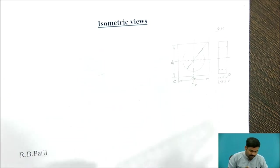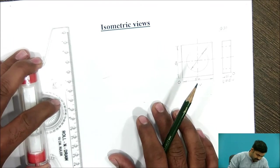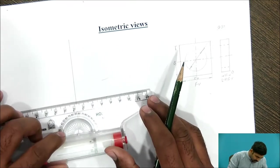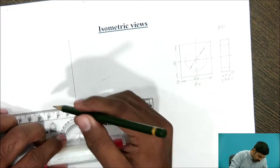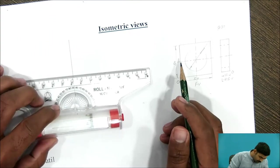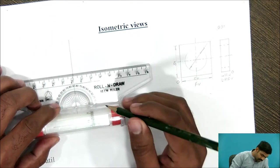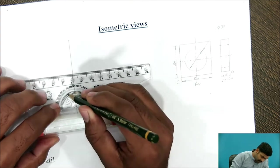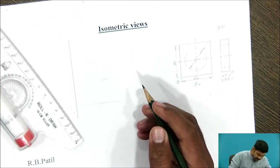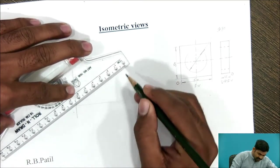Now we will start. First draw the primary axis. From this axis, mark 30 degrees, now join this.